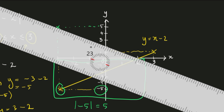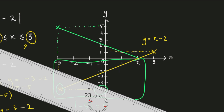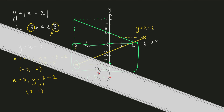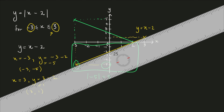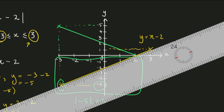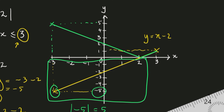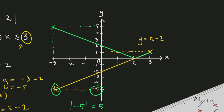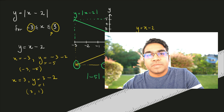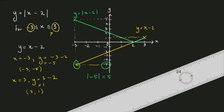So we reflect this portion of the line in the X-axis. The positive region stays the same — it does not change. The resulting green line is the graph of Y equals modulus of X minus 2. This is how we draw a graph of a modulus function. Now, how do we determine the range of the modulus function for the given domain? For the domain from negative 3 to 3,